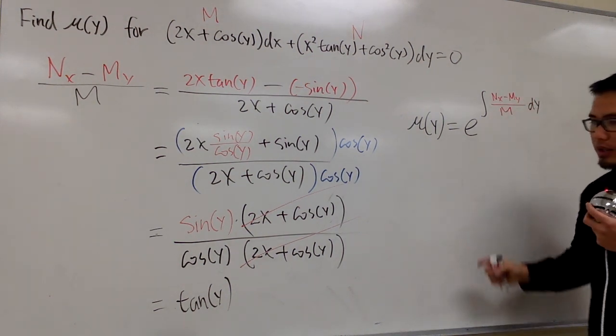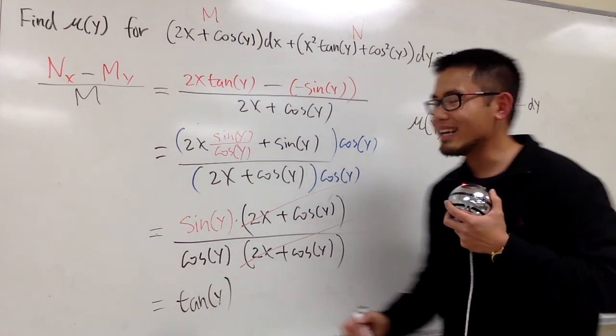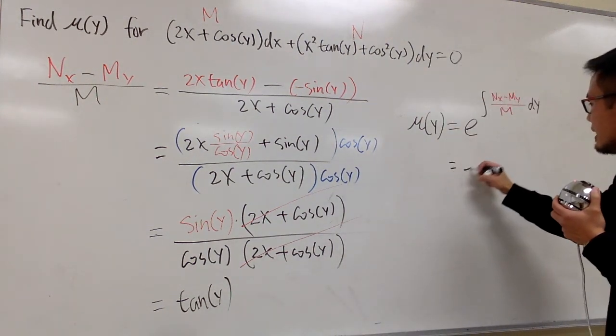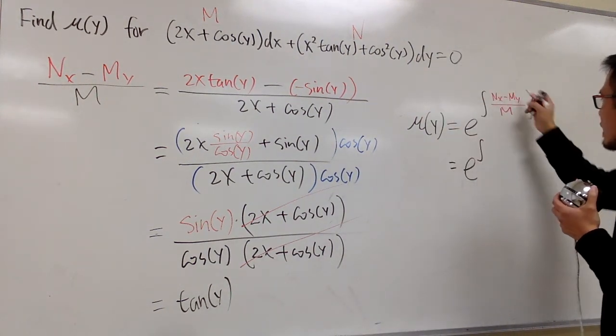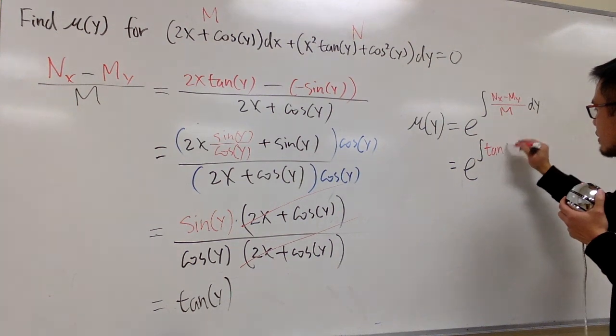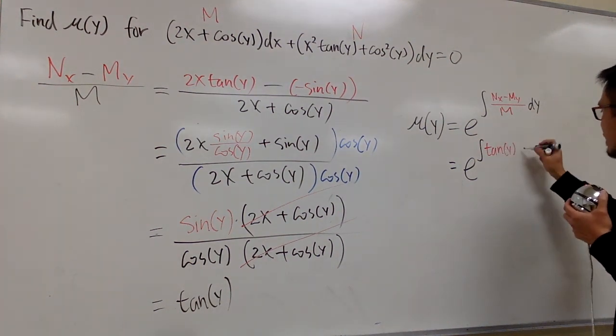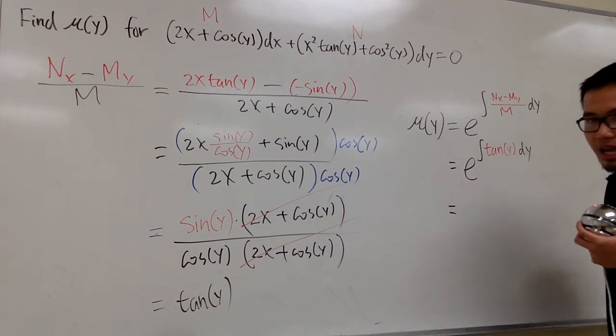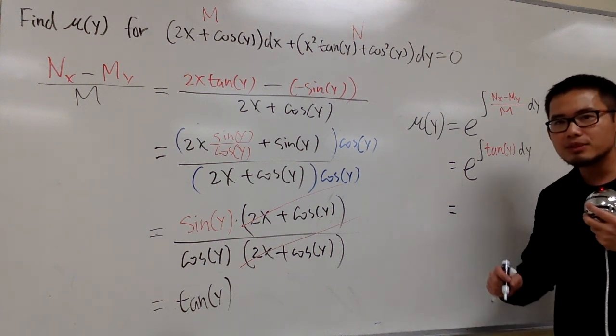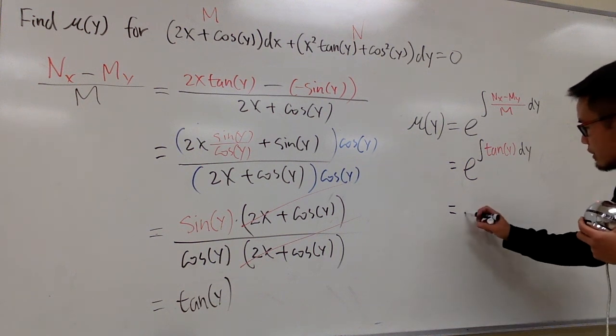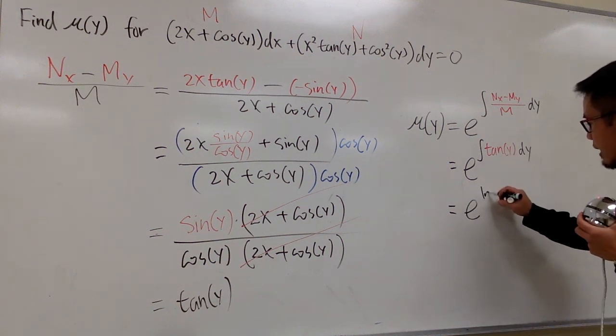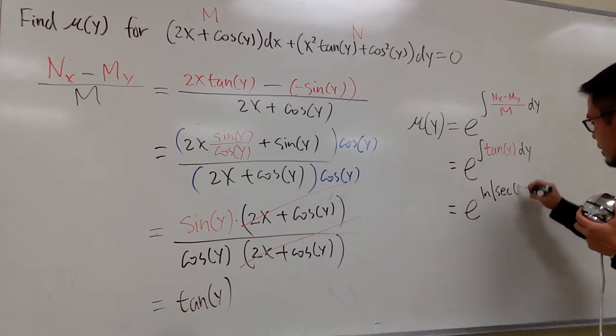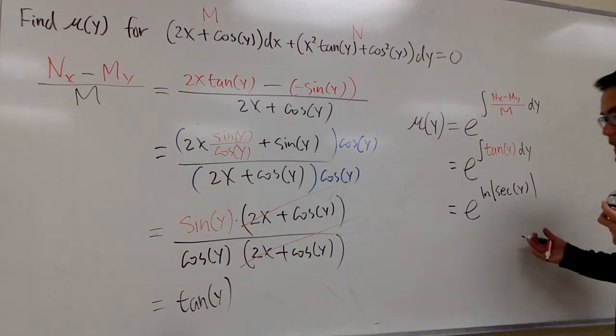This red part, all together is just tangent of y. So you know this is just going to be e raised to the integral power. This is just tangent of y, and then we have the dy. Right now, what's the integral of tangent y? It's ln absolute value of secant y. So this is just e raised to the ln absolute value of secant of y.